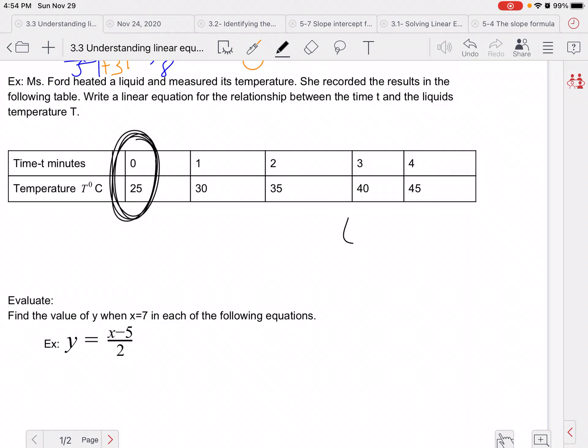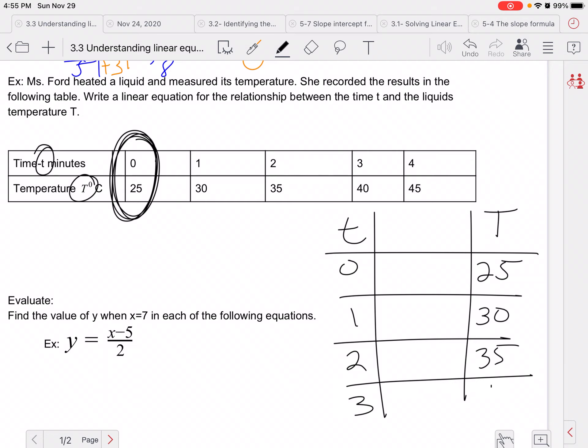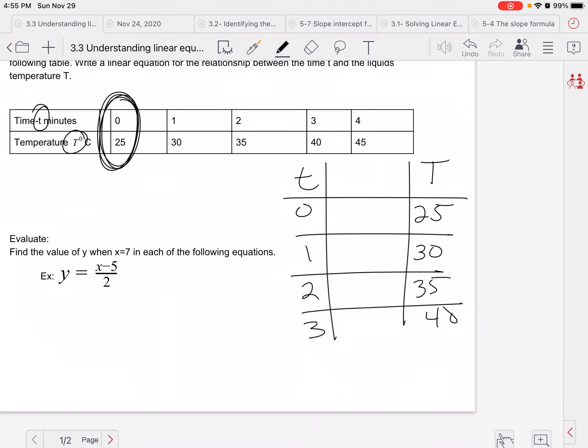So we're going to focus on that for a second. So again, I'm going to make this little table, and I'm going to go T to big T, because we tend to call time little T. That's why I have the little T here, and temperature is a big T. So we're going from zero to 25. Then we're going from one to 30, and then we're going from two to 35, three to 40, and four to 45.